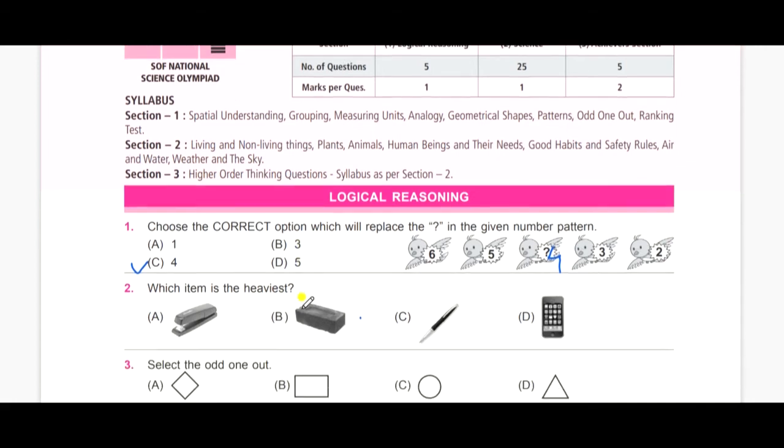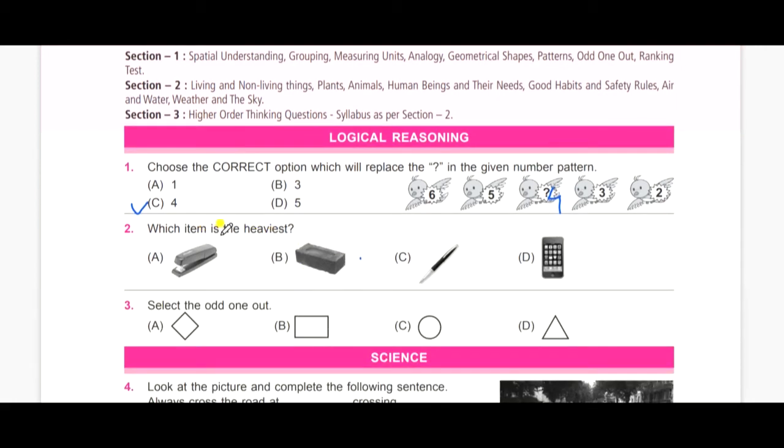Now let's look at the second question. Which item is the heaviest? A, stapler, B, brick, C, pen and D, mobile. Think for your answer. Yes, you are right, it's B, brick.